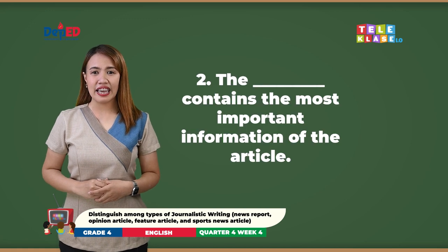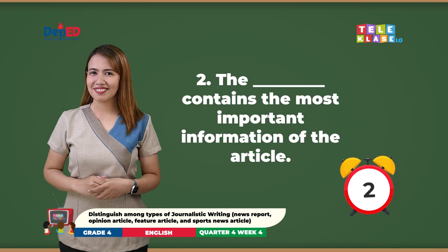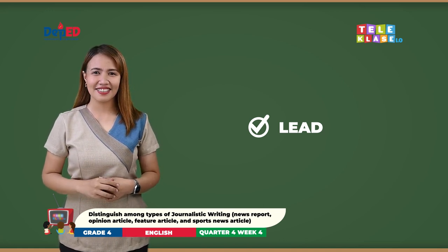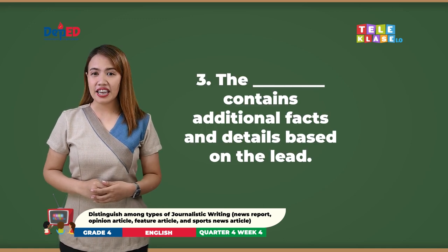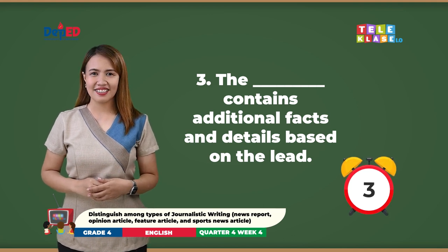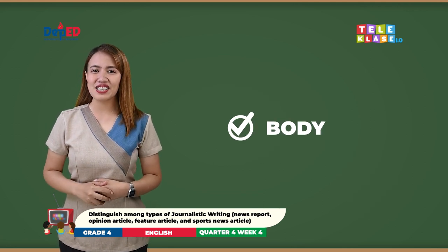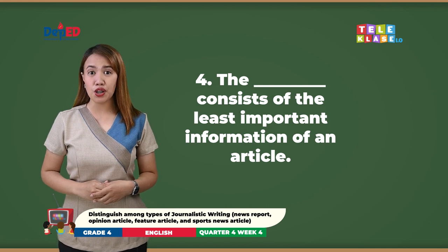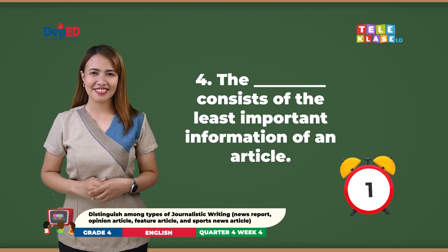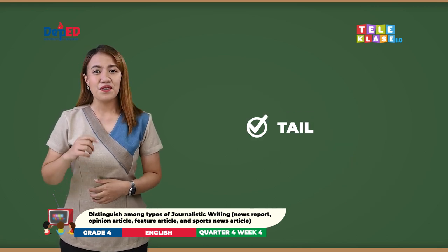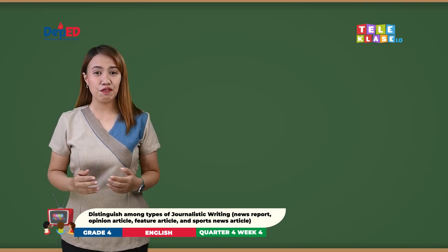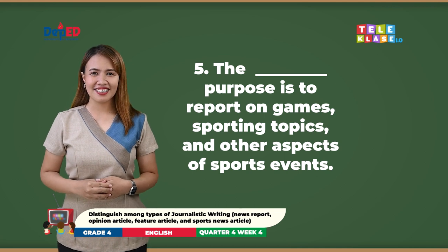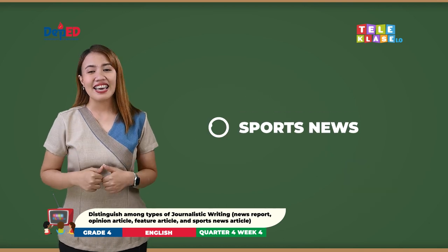Second, the blank contains the most important information of the article — the answer is lead. The blank contains additional facts and details based on the lead — the correct answer is body. The blank consists of the least important information of an article — the answer is tale. Finally, the blank's purpose is to report on games, sporting topics, and other aspects of sports events — the answer is sports news.